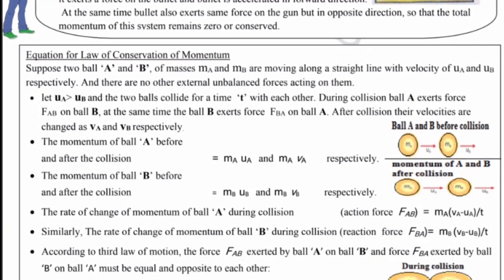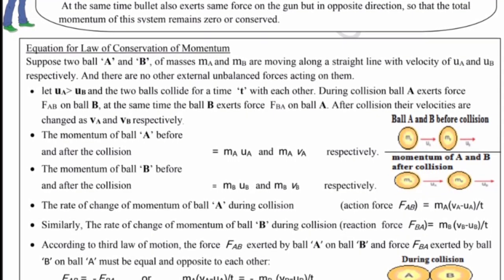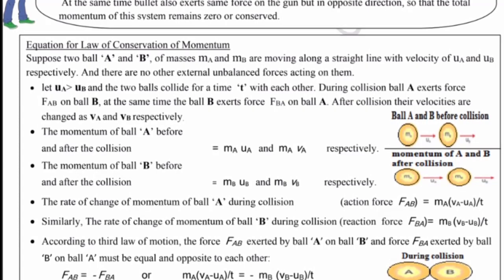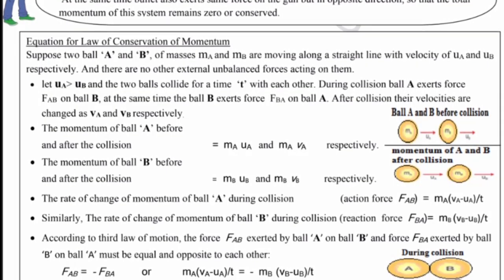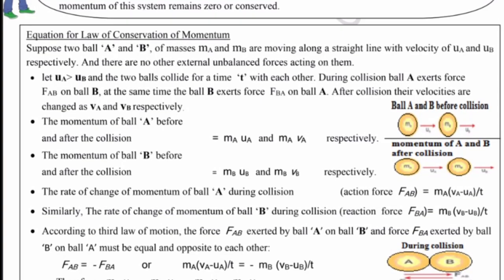The momentum of ball A before and after collision is mAuA and mAvA respectively. You can see here. The momentum of ball B before and after collision is mBuB and mBvB respectively.